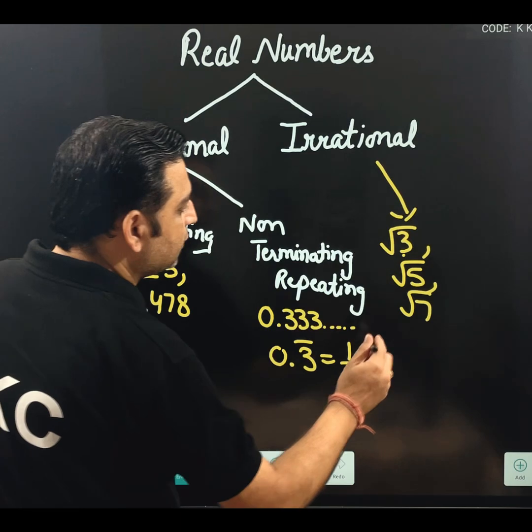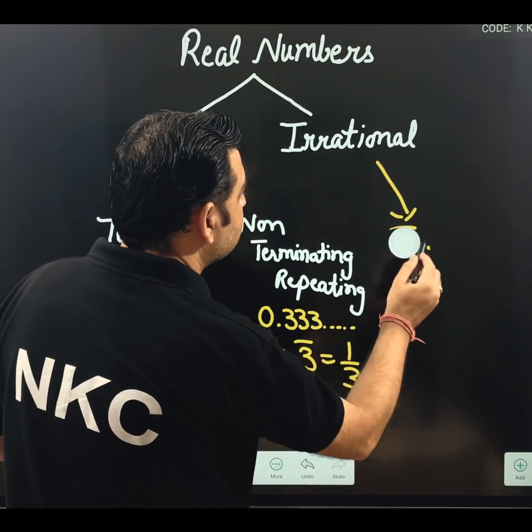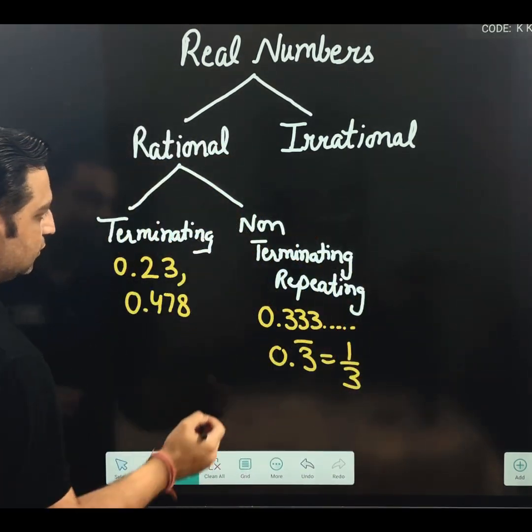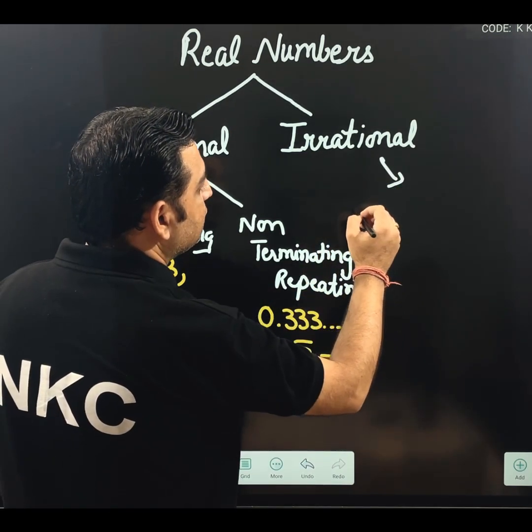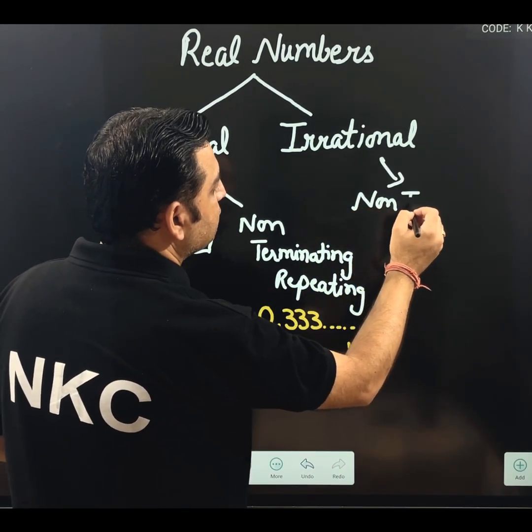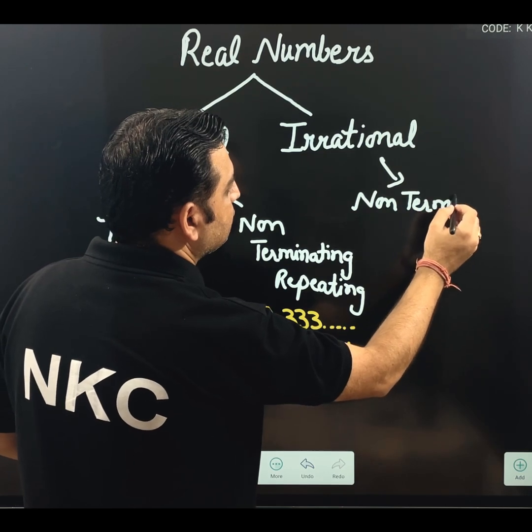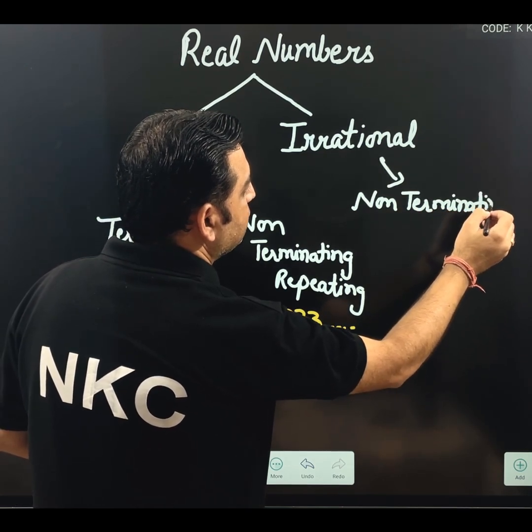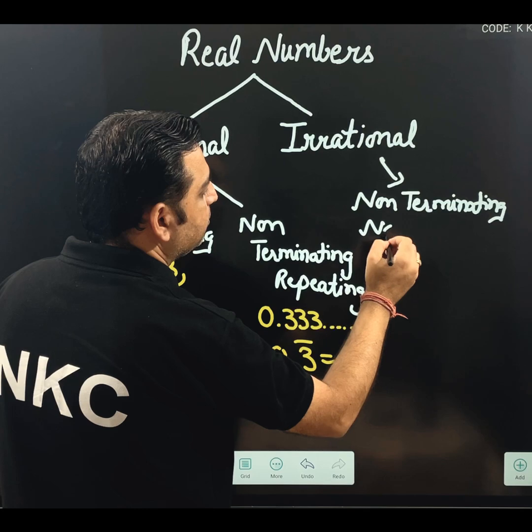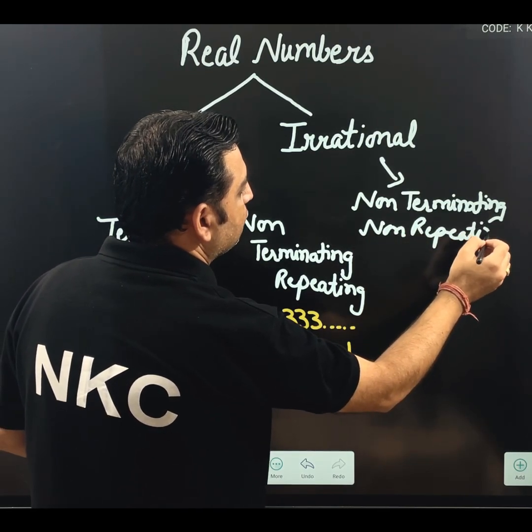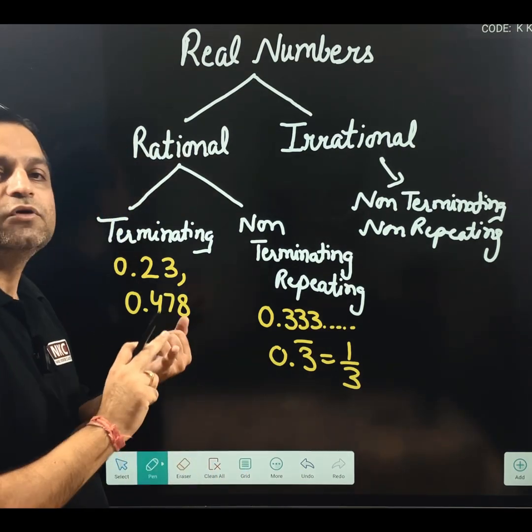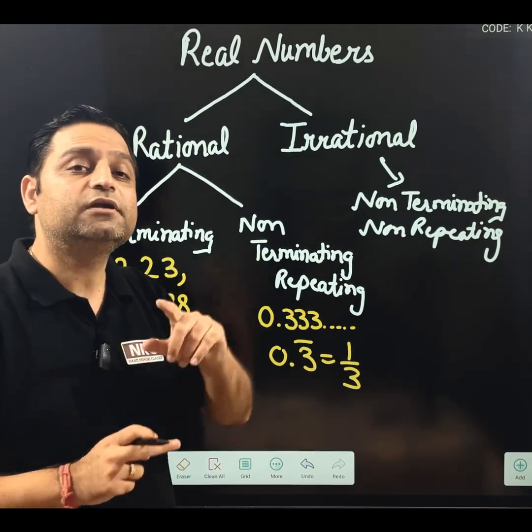But, technically, if I talk about the way we are already expressing terminating, non-terminating. For irrational number, it will be non-terminating, non-repeating. Non-terminating, non-repeating, which is not ending after decimal and even it is not repeating.